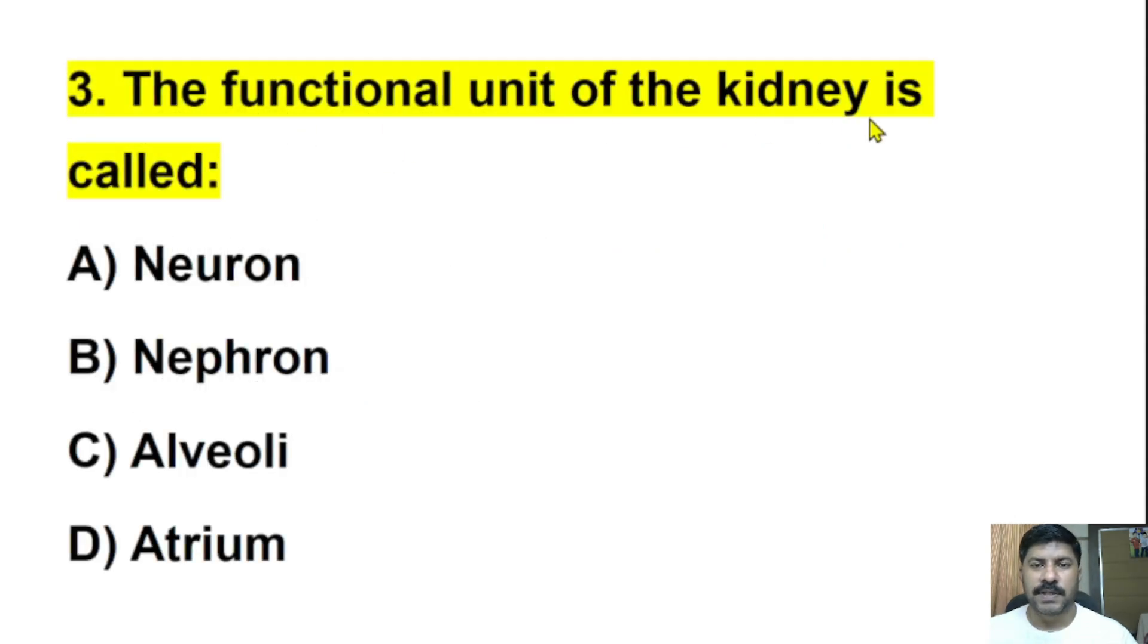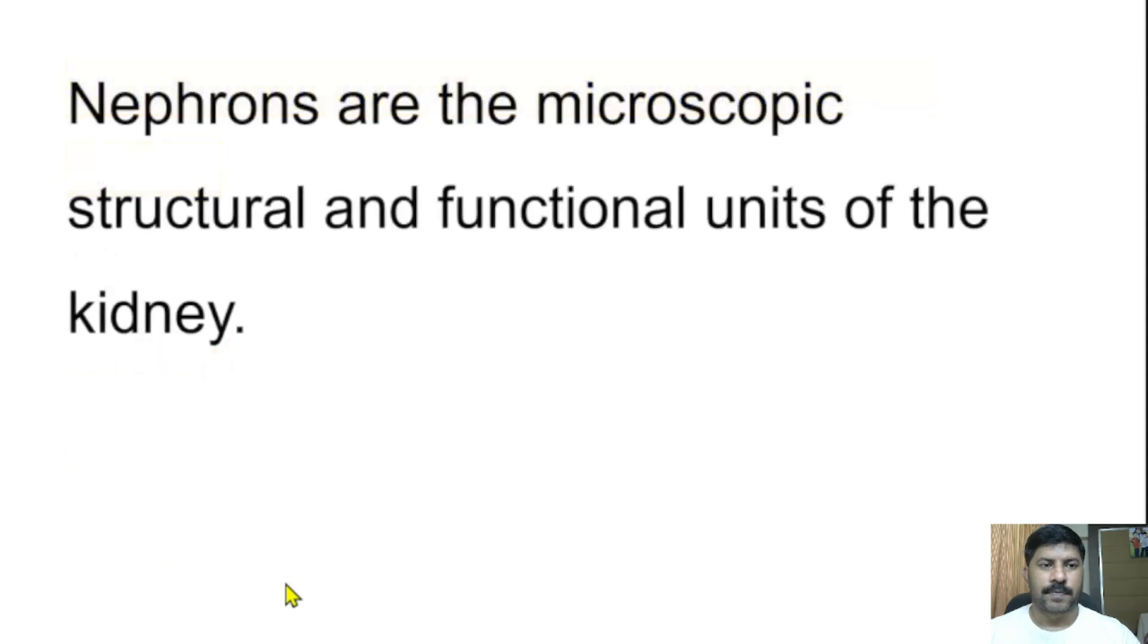Third question: The functional unit of the kidney is called? Neuron, nephron, alveoli, or atria? The correct answer is nephron. The kidney is built by millions of nephrons. Neuron is the functional unit of the nervous system or brain. Alveoli is seen in lungs and helps in gas exchange. Atrium refers to the upper two chambers of the heart. We have right and left atrium, and lower chambers are right and left ventricles.